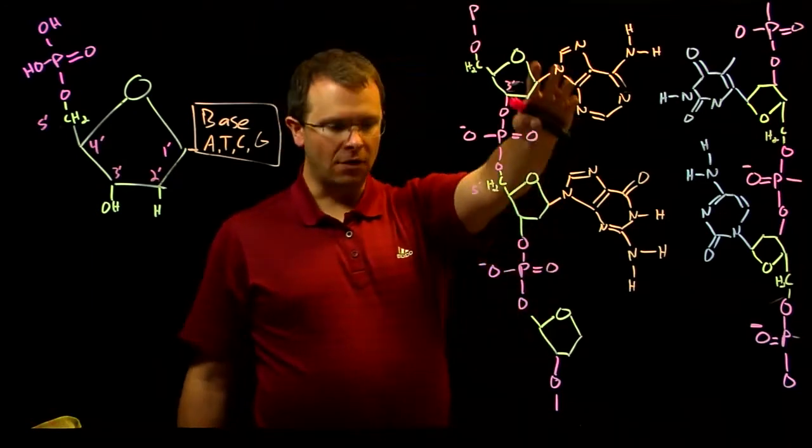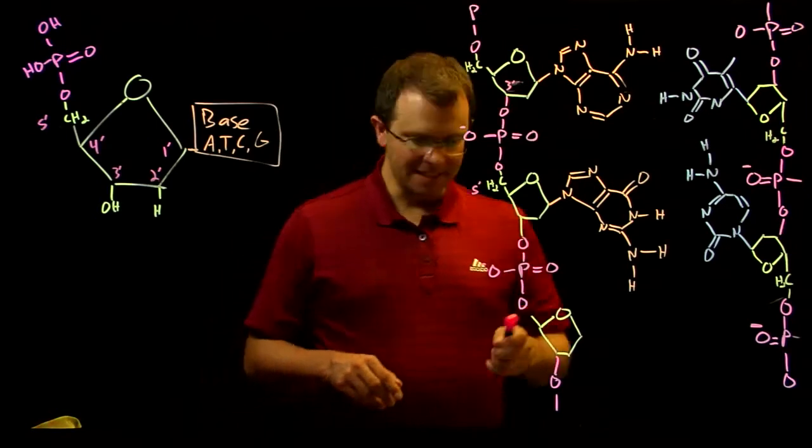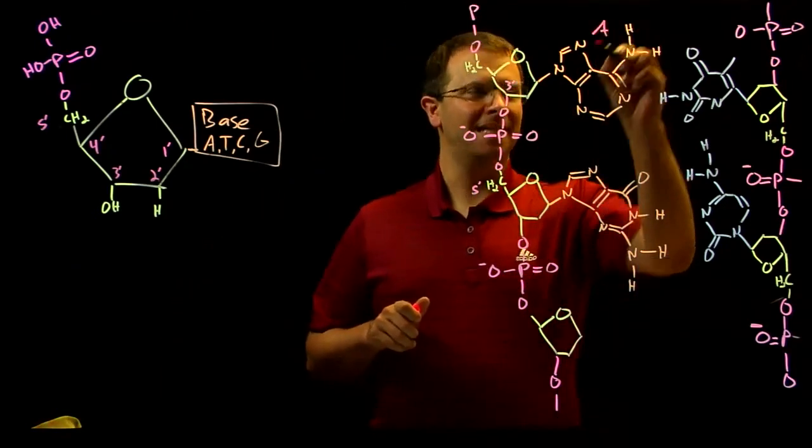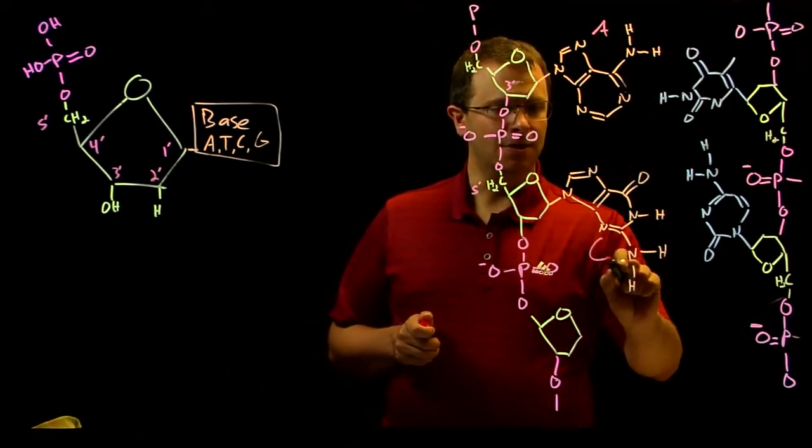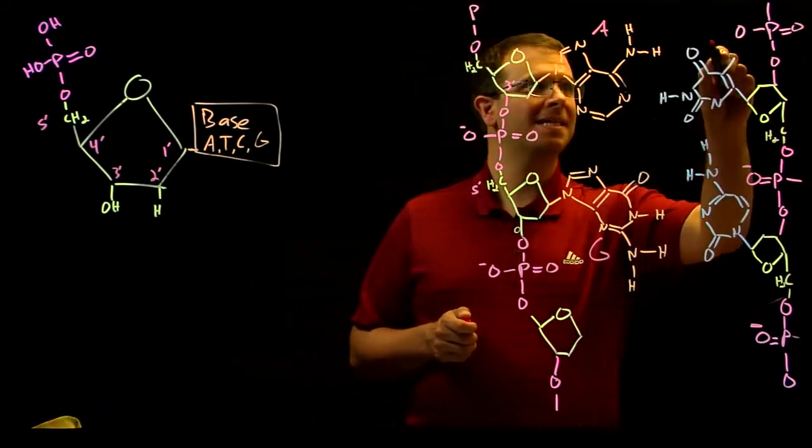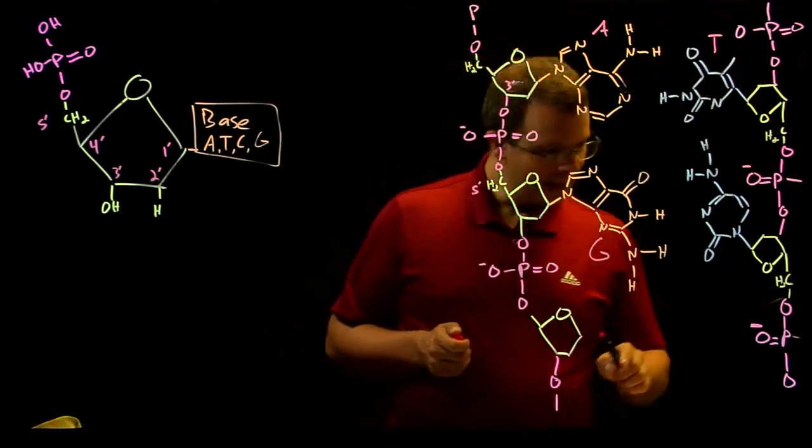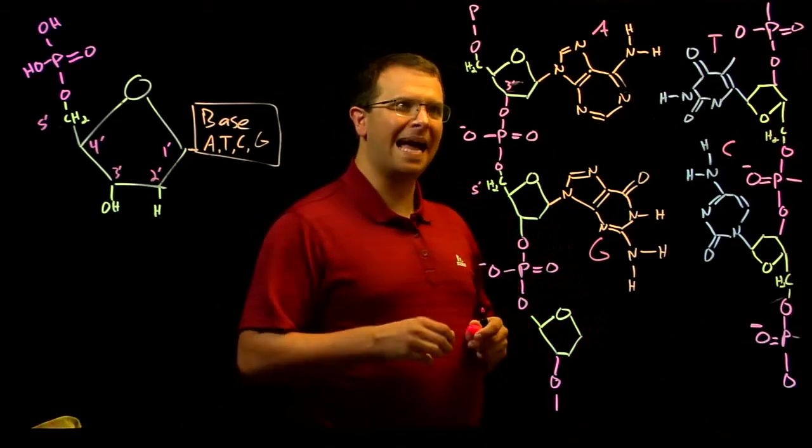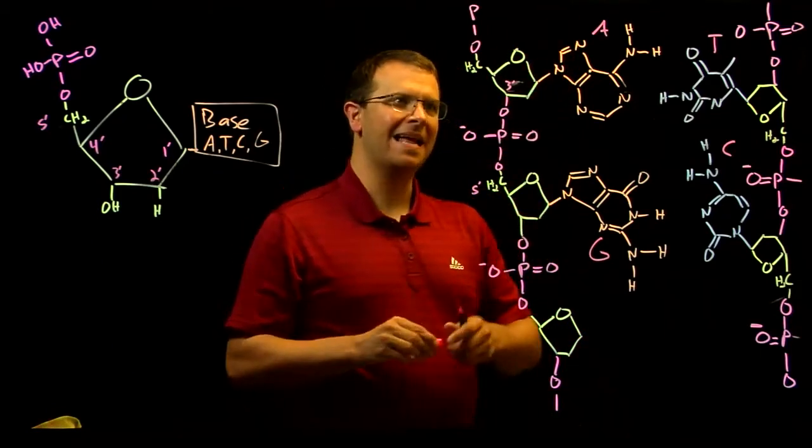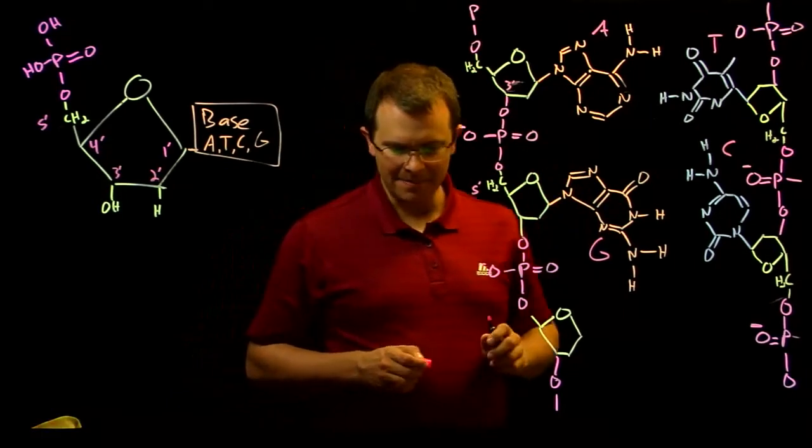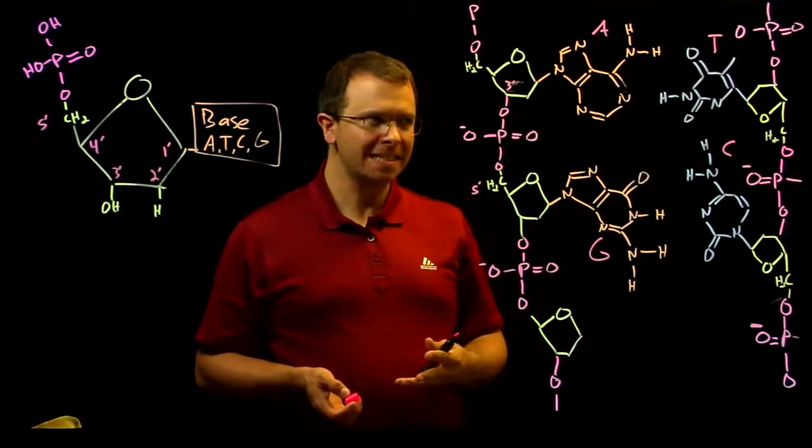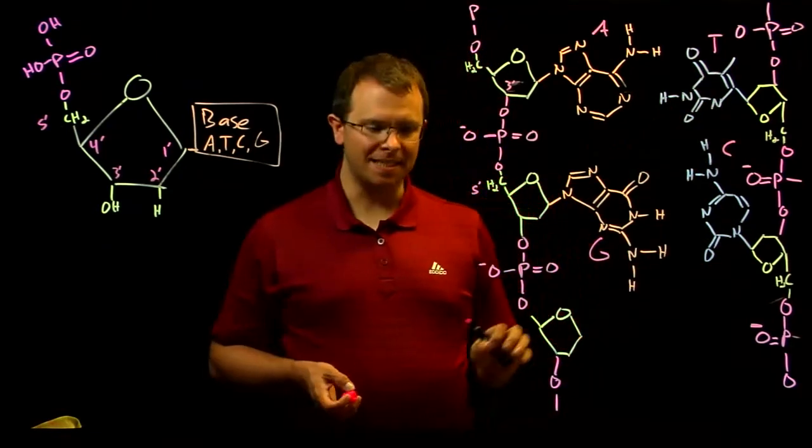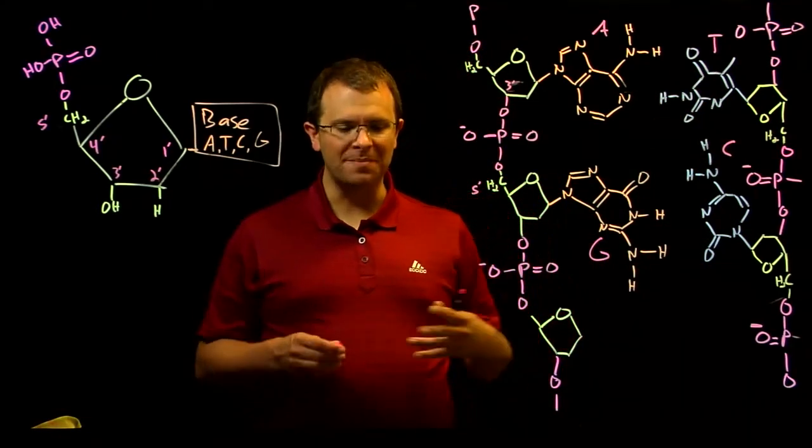Note that I've also gone ahead and drawn some bases here. This base right here is an adenine. This base is a guanine. This base is a thymine. And this base is a cytosine. Note that the adenine and the guanine have two rings in them, and so they're called purines. While thymine and cytosine each have one ring, and we call them pyrimidines.